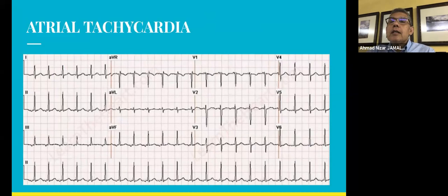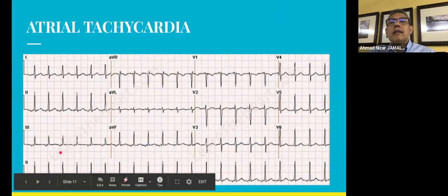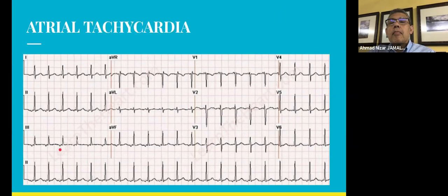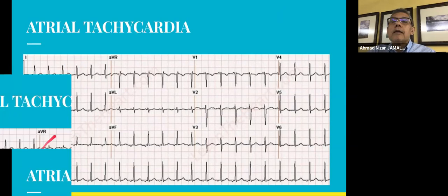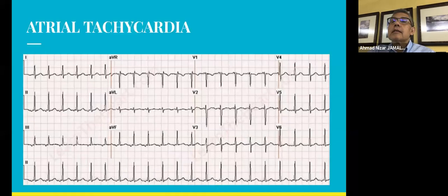In atrial tachycardia, the P wave preceding the QRS complex is not the same as in sinus tachycardia. The P wave here is not upright — it is usually upright in lead two — and the PR interval is rather short. The heart rate is faster than usual, about 100 or slightly above. So this is atrial tachycardia; the pacemaker is not the sinus node but is coming from the atrium, though exactly where in the atrium we cannot tell.